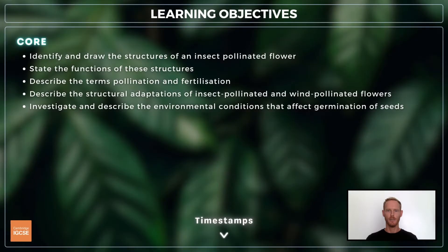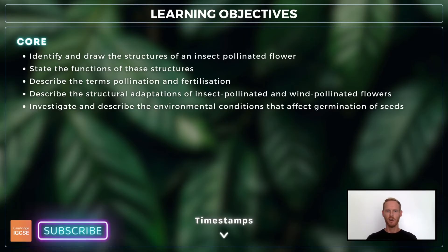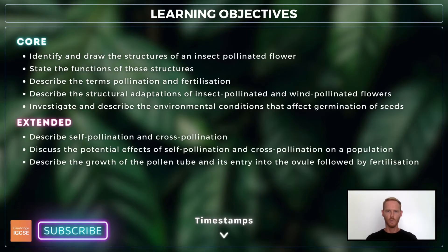For topic 16.3, you need to identify the different parts of an insect-pollinated flower, describe the structural adaptations of insect and wind-pollinated flowers, and investigate the environmental conditions that affect germination of seeds. For extended, you also need to discuss the potential effects of self- and cross-pollination on a population, and describe the process of fertilisation in flowering plants.